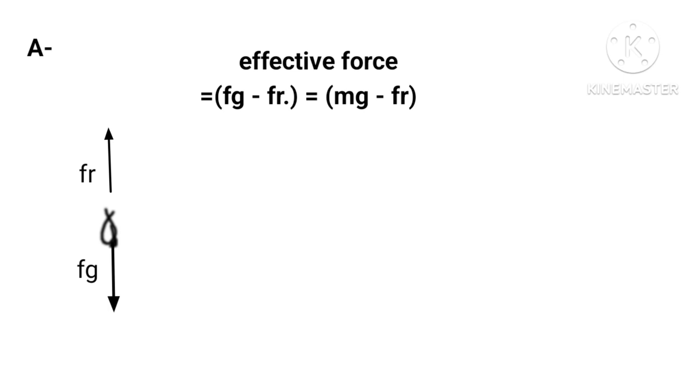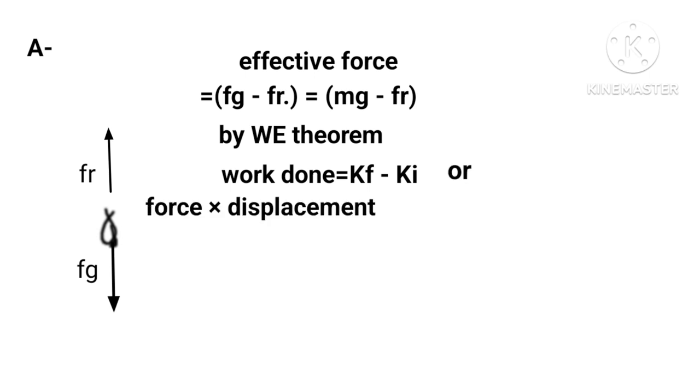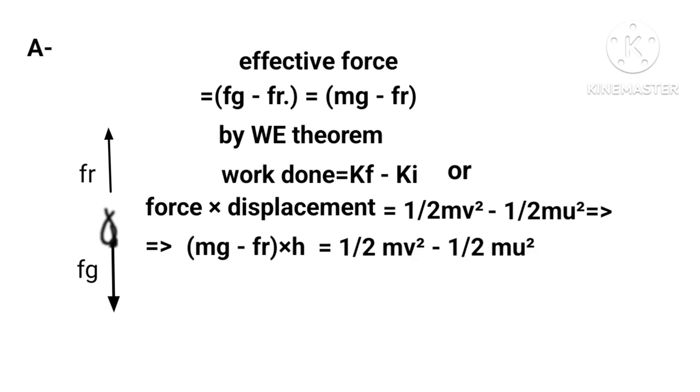By work-energy theorem, work done = Kf - Ki, or force × displacement = ½mv² - ½mu². This implies (mg - Fr)h = ½mv² - ½mu². Substituting: 10⁻³ × 10 × 10³ - Fr·h = ½ × 10⁻³ × 50² - 0. Therefore, 10 - Fr·h = 1.25.